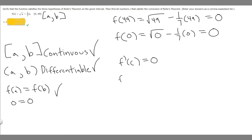So we're given this function f(x) is equal to the square root of x minus 1 over 7 times x. So what's the derivative of this going to be equal to? So if we differentiate, what is the derivative of the square root of x? Well, this is going to be the same thing as x to the 1 half.